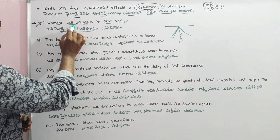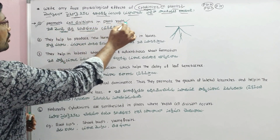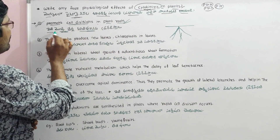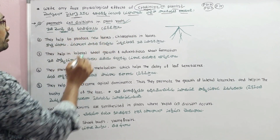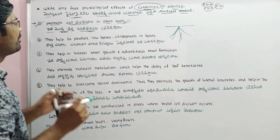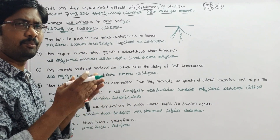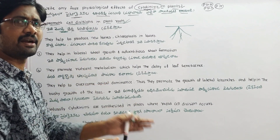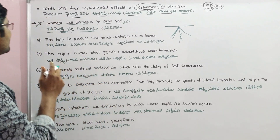So the first point is: cytokinins promote cell divisions in plant roots. This is the first physiological effect of cytokinins.